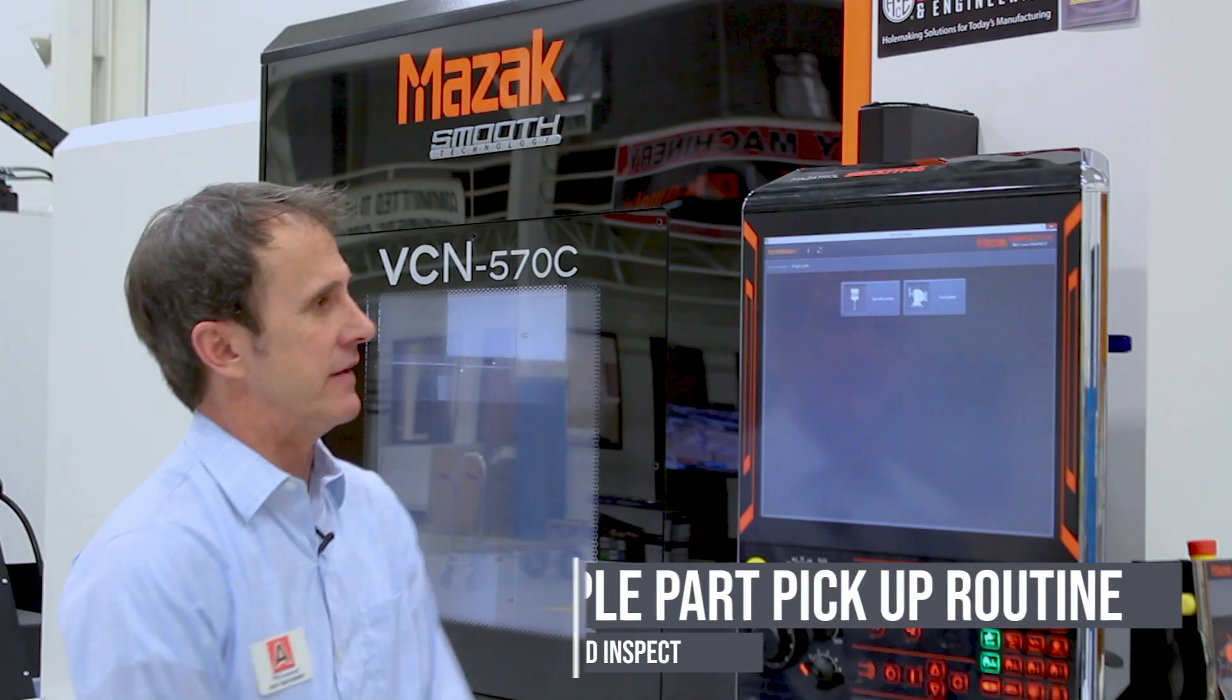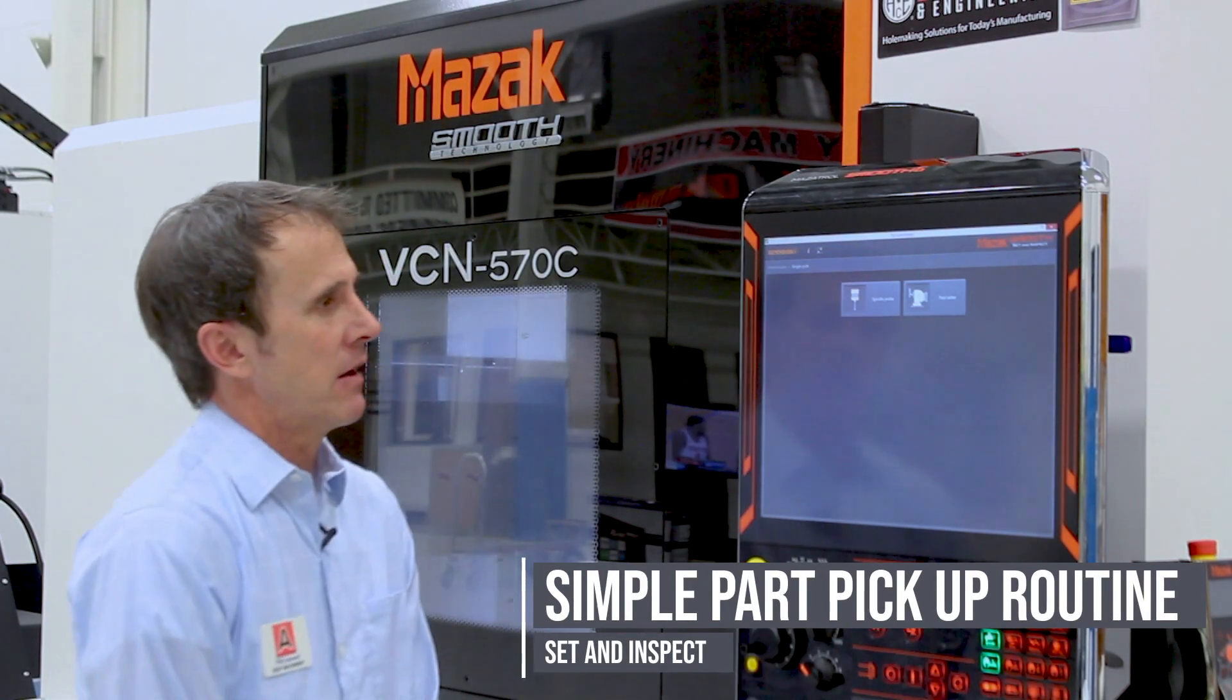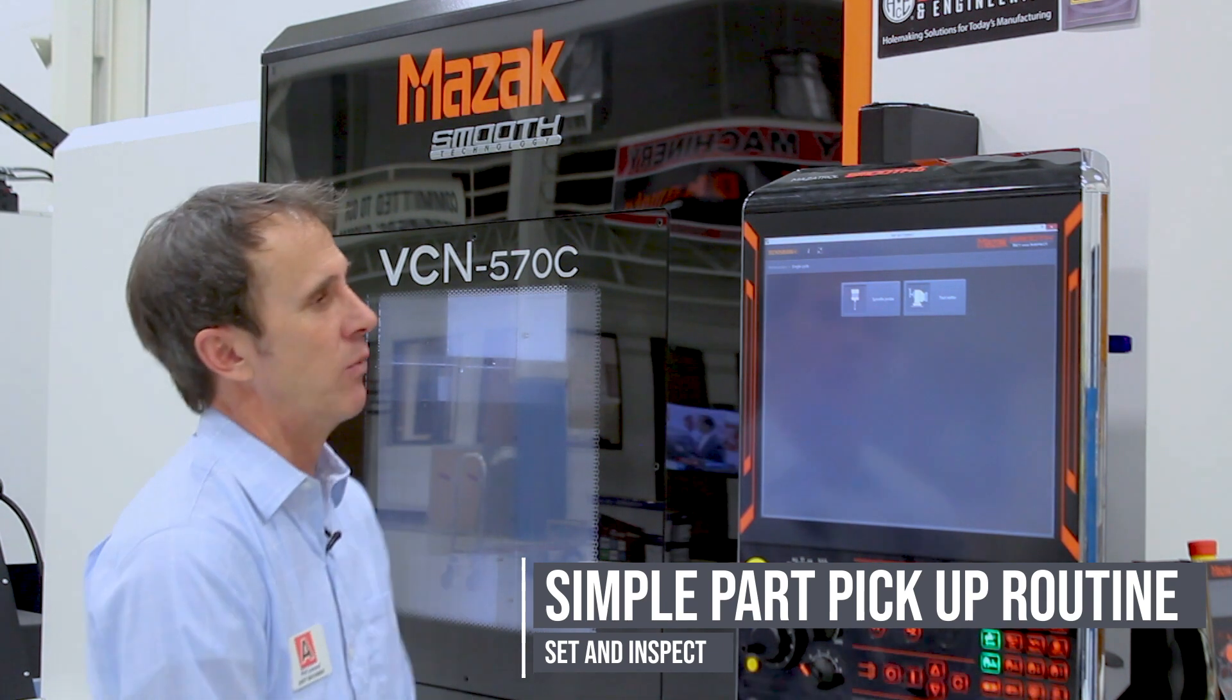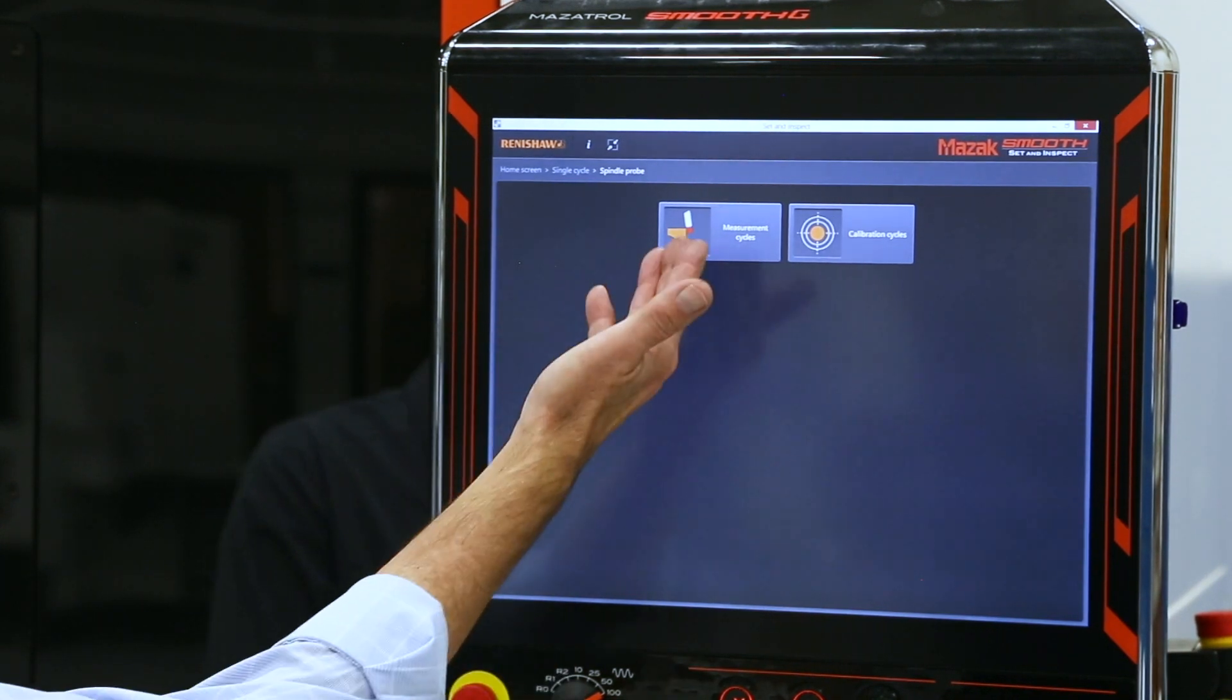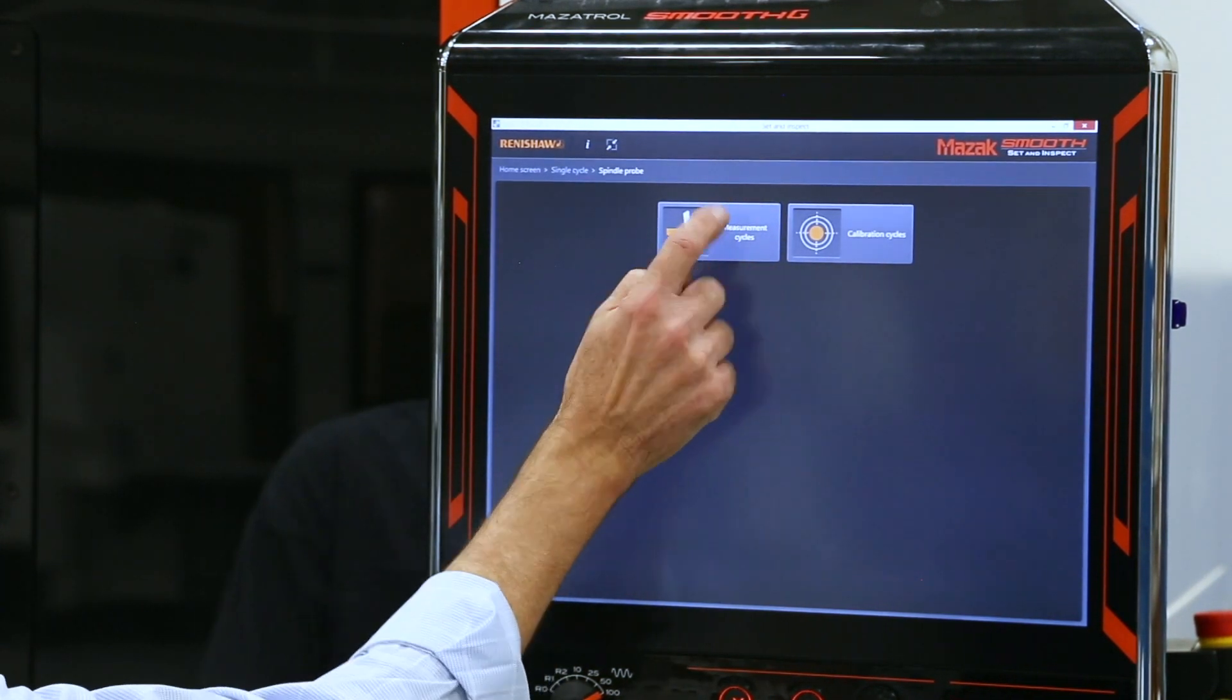So I'm going to demonstrate the ease of the GUI here with the set and inspect. I want to do a simple setup picking up X and Y in a block because I'm working out of center. So I select spindle probe. I have a choice of measurement cycles or calibration. We're going to do a measurement.